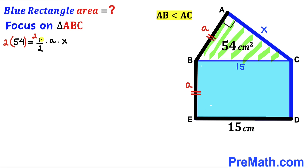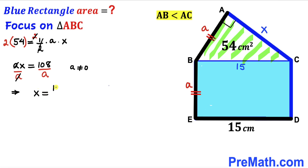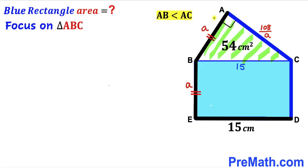Multiplying both sides by 2 removes the fraction, giving us a × X = 108. Dividing both sides by a (where a ≠ 0) isolates X, so X = 108/a. Therefore the side lengths of right triangle ABC turn out to be: a, 108/a, and 15.